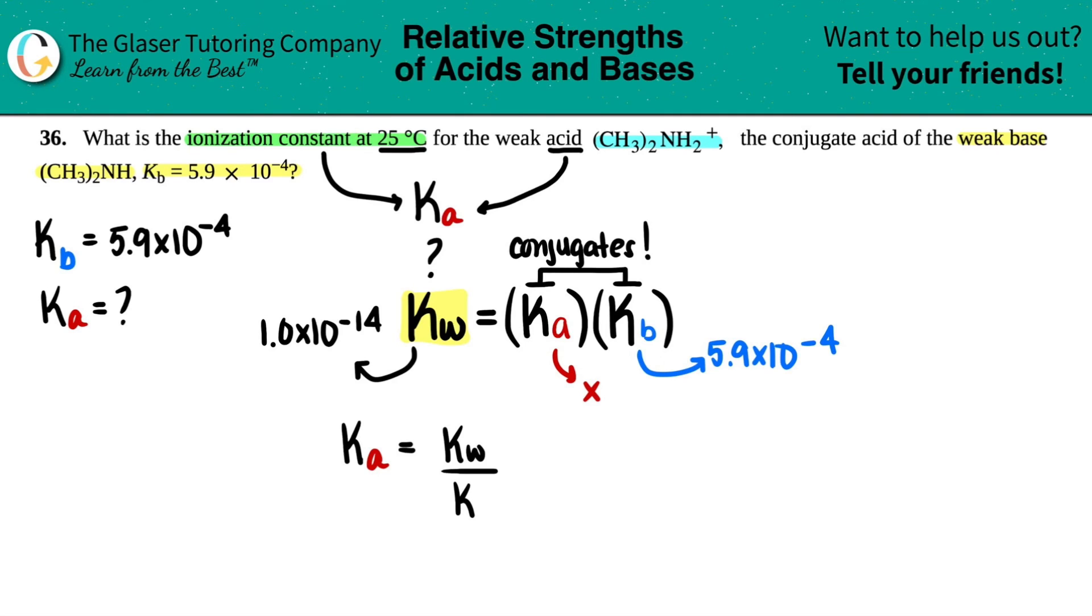If I'm trying to solve for Ka right off the bat, all I would do is I would take my Kw value and divide by Kb. It just makes it easier for me to do the work here. But if you want to just use that formula and plug it in, go right ahead.